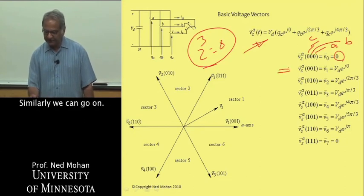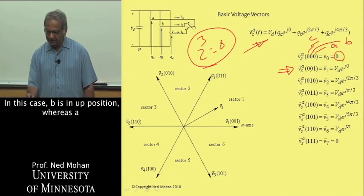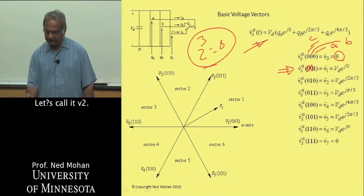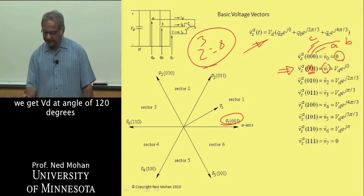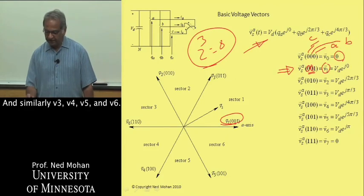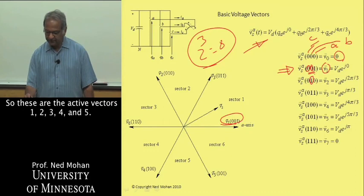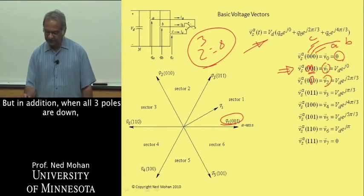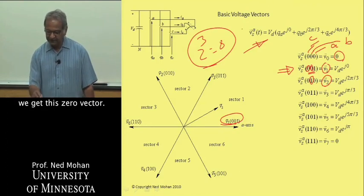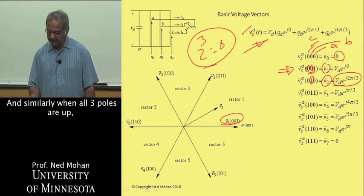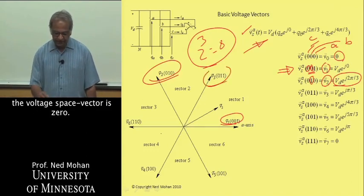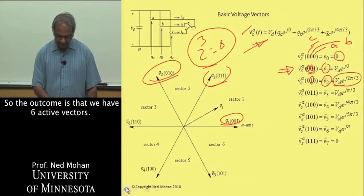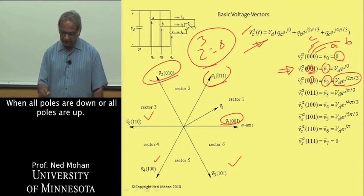In this case, pole A is in up position whereas pole B and C are in down position. This can be represented by V1, which is this vector over here, equal to VD with an angle of zero degrees. Similarly we can go on. In this case B is in up position whereas A and C are in down position, let's call it V2. In that case, plugging this into this equation, we get VD at angle of 120 degrees. We get this basic vector, and similarly V3, V4, V5, and V6. These are the active vectors 1, 2, 3, 4, 5, and 6.